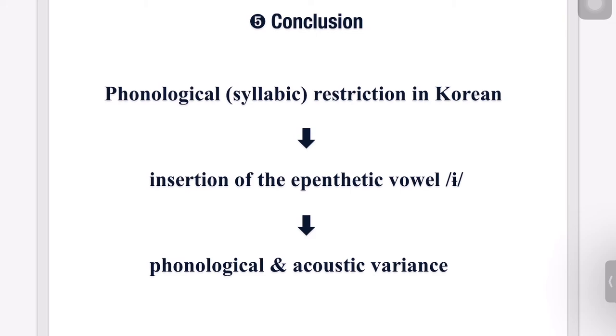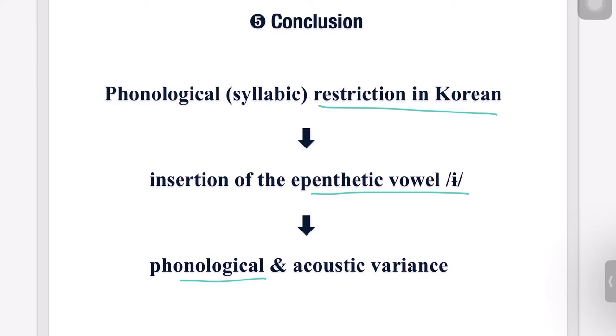In this lecture, we analyzed the epenthetic vowel ɨ phonologically and acoustically. Now, it's time to wrap up today's lecture. Because CCVC is not allowed in Korean phonology, the epenthetic vowel ɨ is inevitably inserted. Consequently, this results in some syllabic change and the acoustic variance. This is the end of this lecture. I hope my video would be helpful in your learning Korean phonology and better understand the differences between Korean and English. Thank you.